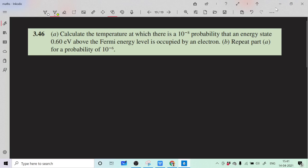which is 0.60 electron volt above the Fermi energy level is occupied by an electron. We also have to repeat the same part when the probability is 10 to the minus 6, considering the level 0.60 electron volt same as in part a.